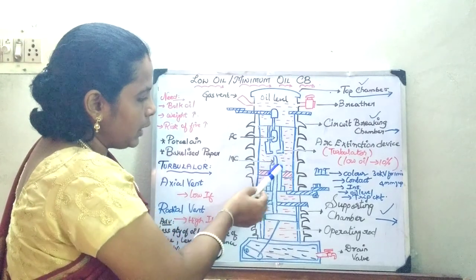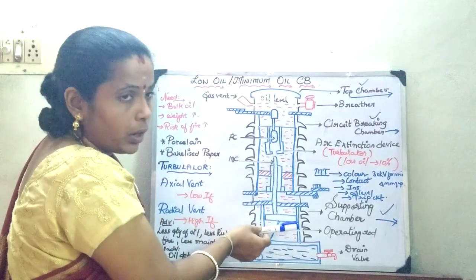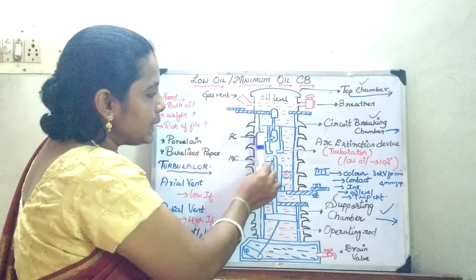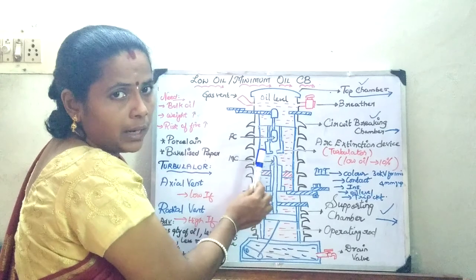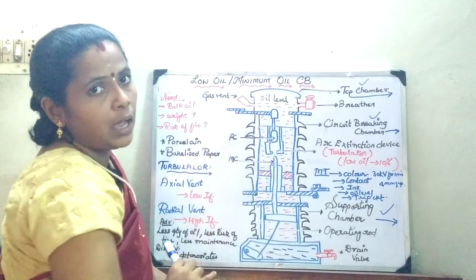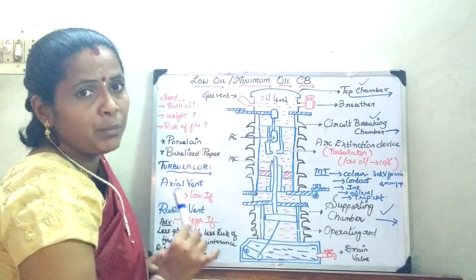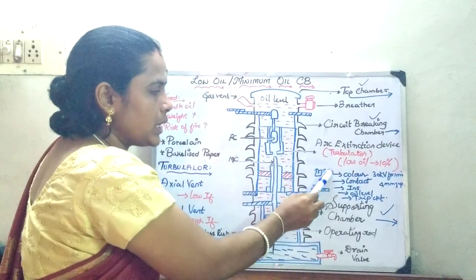So the principle is that whenever a fault occurs, through this piston, this moving contact is going to be moved apart. And this tubulator is acting as an arc extinction device through your radial and axial vents, it quenches the arc. But the main limitation is its maintenance process.